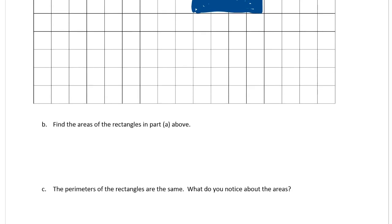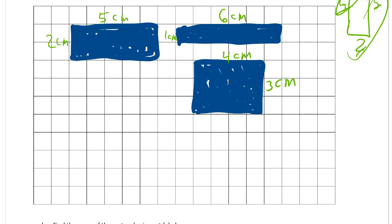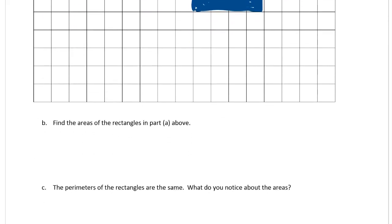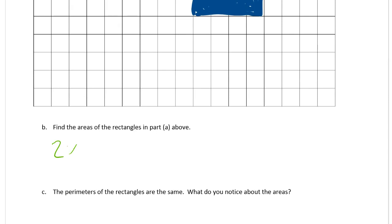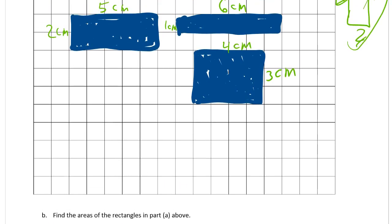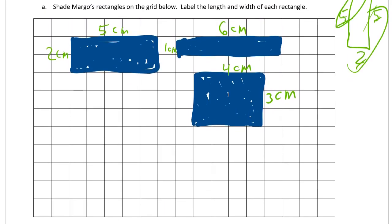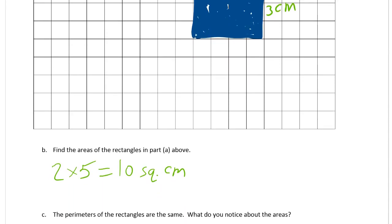Find the areas of the rectangles in part A above. We could label these, but I could say, what do we have? Two by five, one by six. Be careful with this because we're going back and forth from centimeters to square centimeters, but be careful about it because we're talking about length and width. Those are in regular linear units, centimeters, but area has to be in square centimeters.